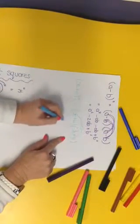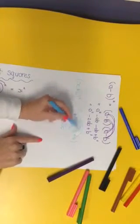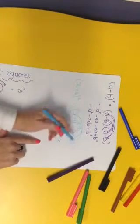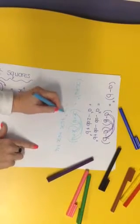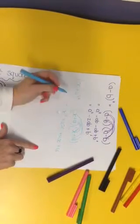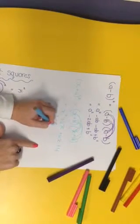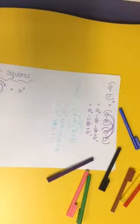x times 4 is 4x, 4 times x is 4x, 4 times 4 is 16. Now we add it up. x squared, there's no other family for him. There's a 4x and a 4x, so we've got 8x plus 16.